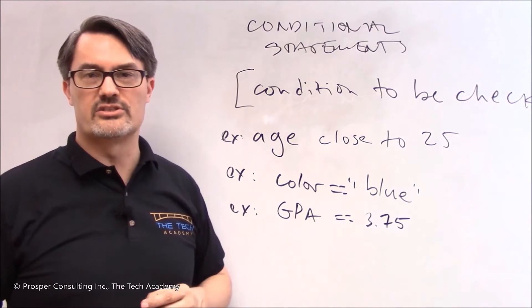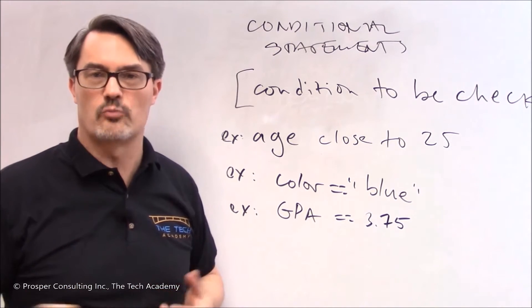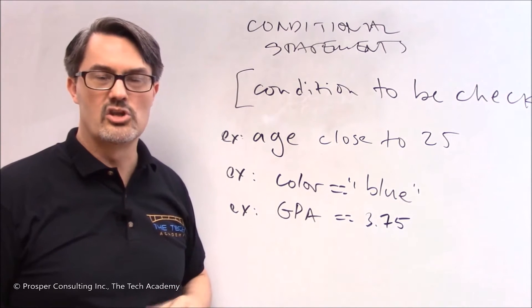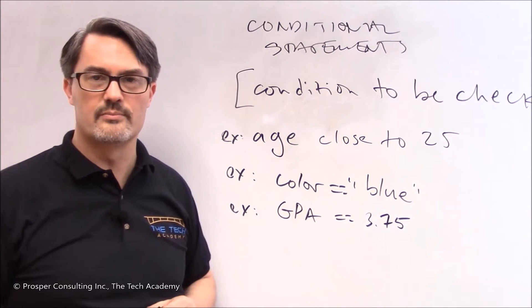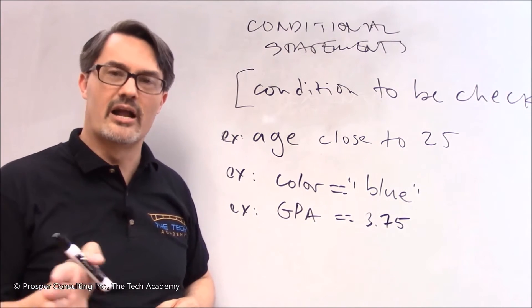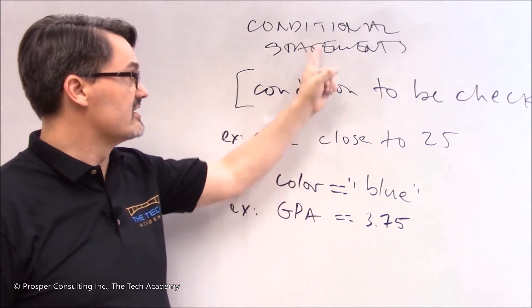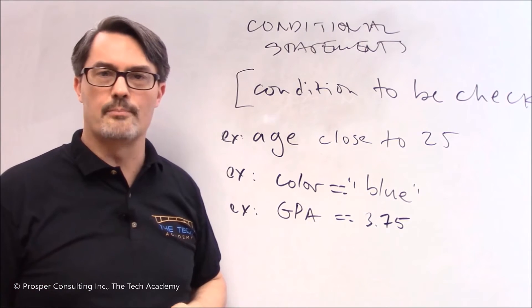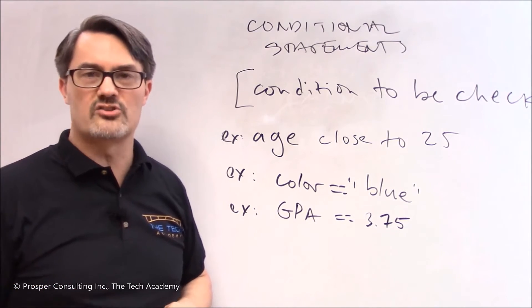If you're doing calculations on whether or not a person's allowed to rent a car, close to doesn't cut it. You have to be greater than or equal to 25. So computers need unambiguous statements. These conditional statements are unambiguous. They either are or are not met.